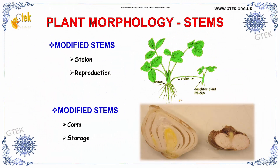Modified stems also have a stolon, used for reproduction. You can see the stolon, which is used for reproduction of a daughter plant from the mother plant. And it also has a corm, used for storage purpose as well. You can see it over here.